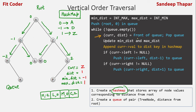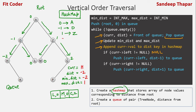In the next iteration, front of the queue is H, so current becomes H and distance is minus 2, then we pop. We update minimum distance to minus 2; maximum distance remains 1. We append H to the minus 2 key in the hash map. We check left of H, which is null, so that condition is false. Right of H is K, so we push K comma minus 1 to the queue.